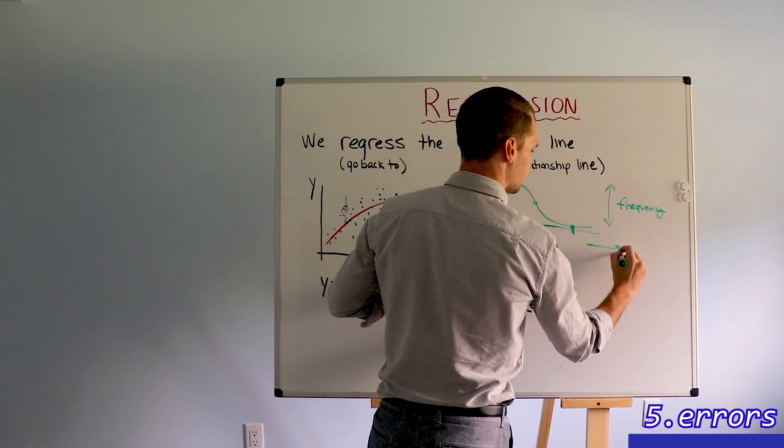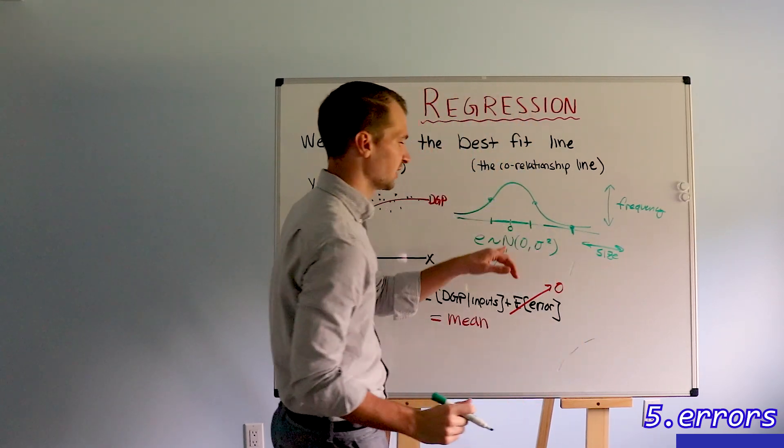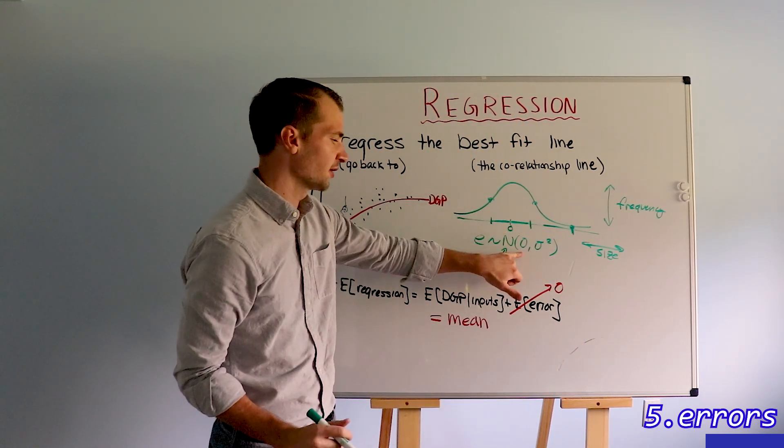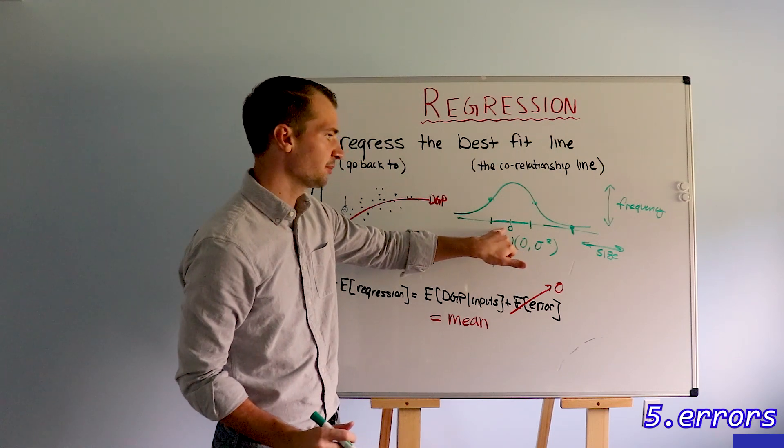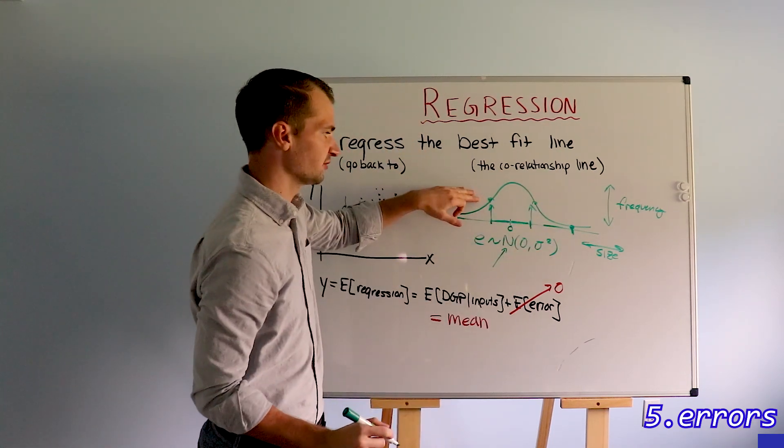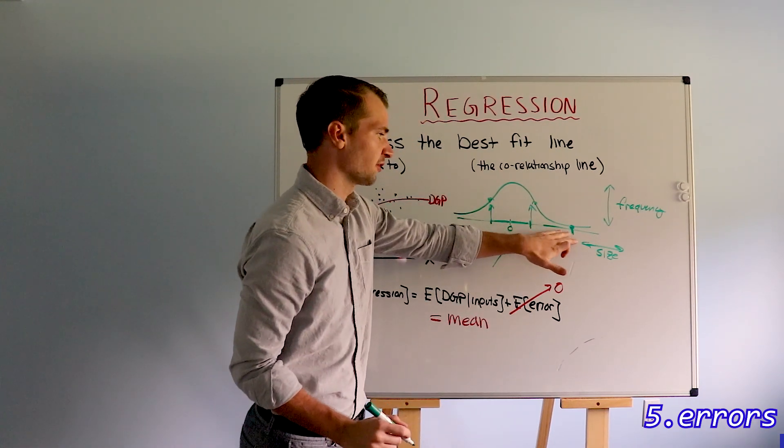And in this case, we're looking at size this way. So errors closer to our expectation happen more frequently because the graph is higher than errors far away.